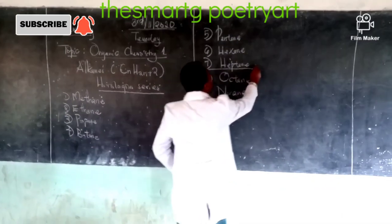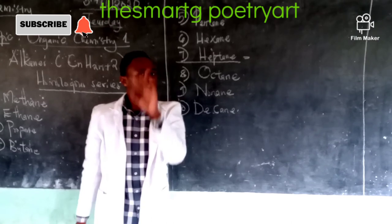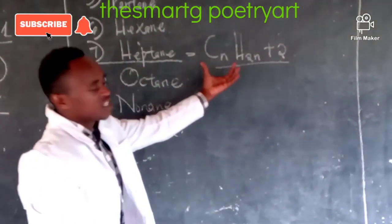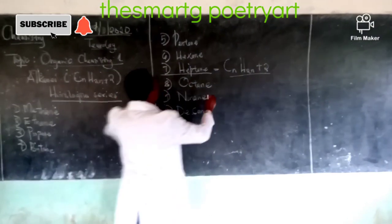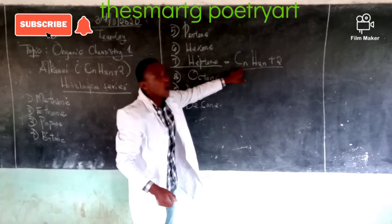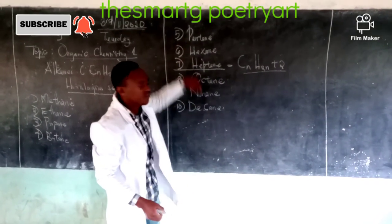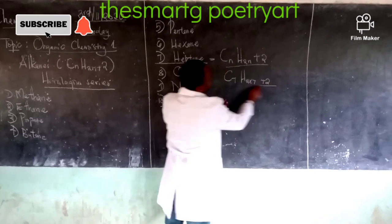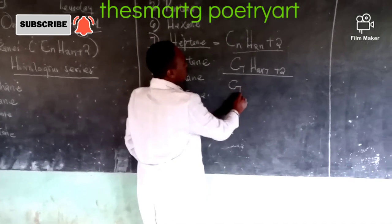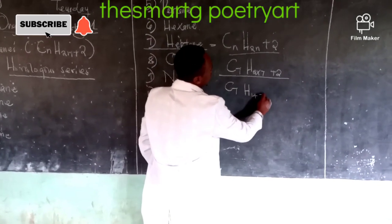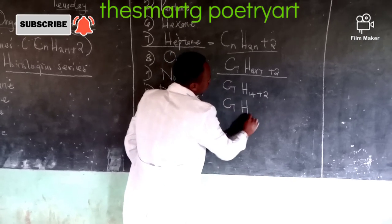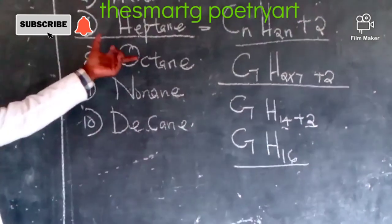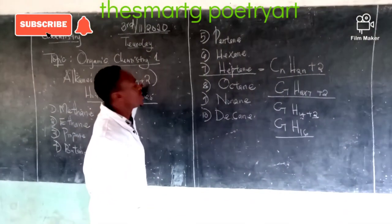So I choose the molecular formula for heptane. The general formula is CnH2n+2. Heptane is number seven, so wherever we have the letter N, we substitute the position. We get C7H(2×7)+2, which gives us C7H14+2, and therefore C7H16. That is the molecular formula for heptane, a hydrocarbon belonging to the series called the alkanes.